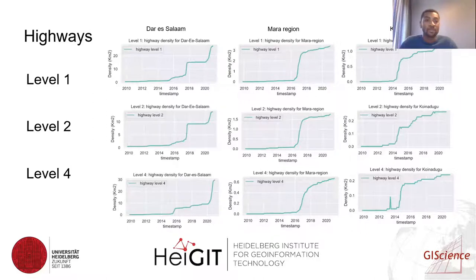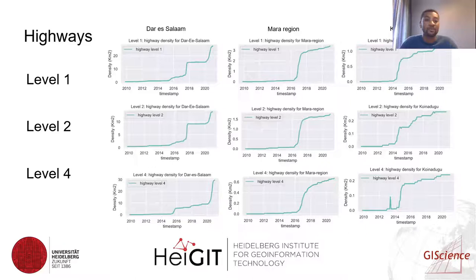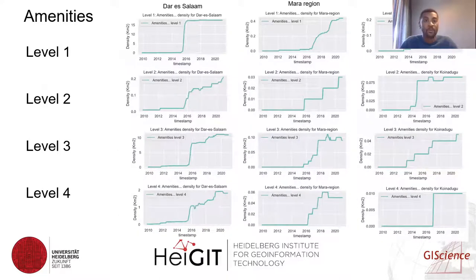A similar trend was identified in highways, where sometimes mapping activities were done simultaneously. For example, in Dar es Salaam, level one and level two seem to be mapped differently from level four. A similar pattern was identified in the Mara region, but the mapping activities were quite different. In amenities, it was quite different — the mapping activities happened differently across all levels.